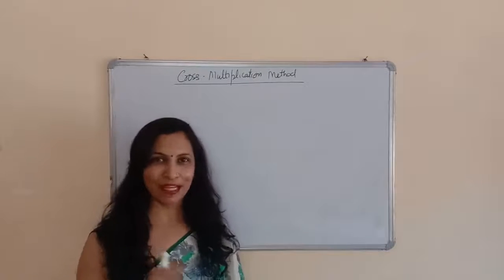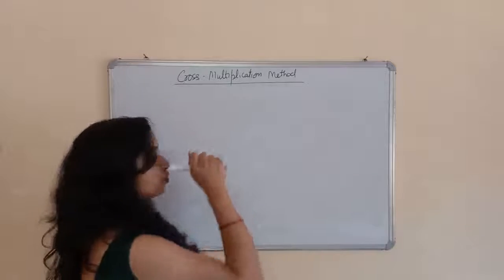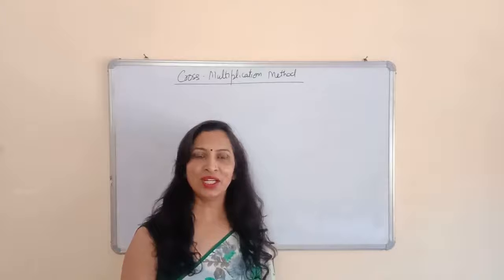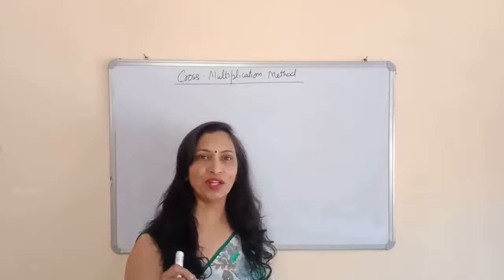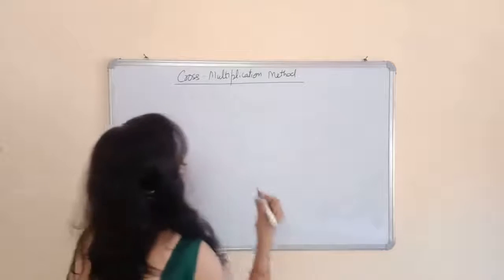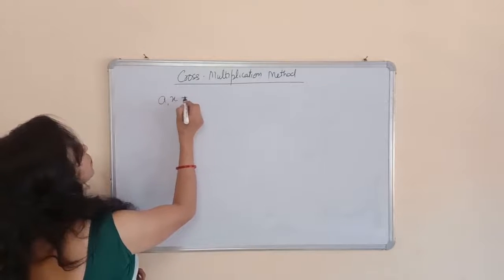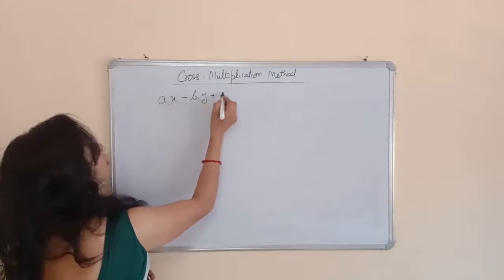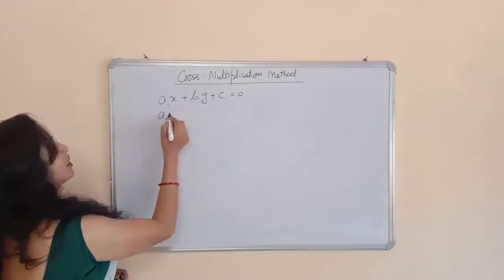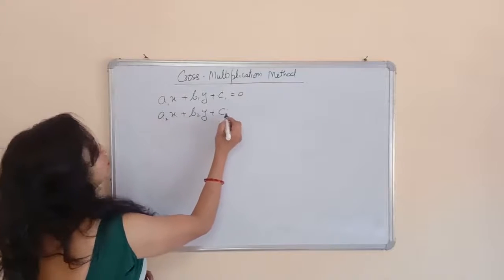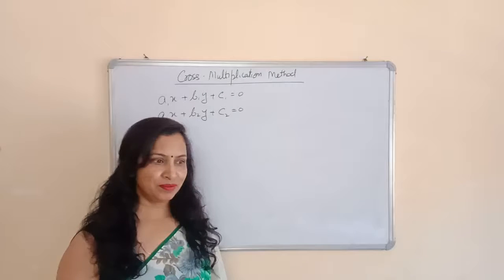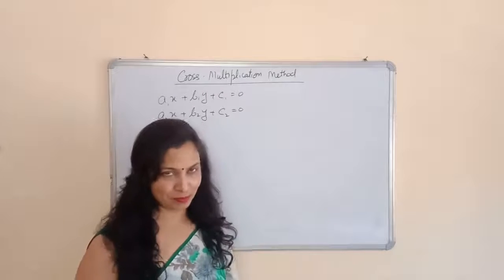Good morning students. I am going to explain the cross multiplication method for solving two equations. First I will explain what this method is and how we can solve these equations, and then we will take some examples. These are two equations: a1x + b1y + c1 = 0 is the first equation, and a2x + b2y + c2 = 0 is the second equation. Suppose you want to solve them by the cross multiplication method.